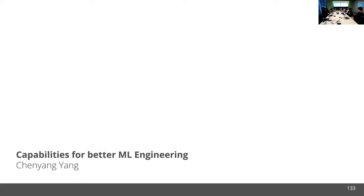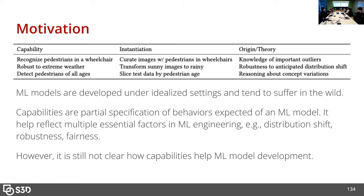Today I'm going to present my project on capabilities for better ML engineering. The background is that many models are trained under idealized settings assuming a static dataset that is also IID, but this might not be true in many practical settings. These models often suffer in the wild. For example, a pedestrian detection model trained on public datasets might not recognize wheelchair users, might not be robust to extreme weather, or might not fairly detect pedestrians of different ages. To mitigate these issues, capabilities have been proposed — essentially partial specifications of machine learning model behaviors.